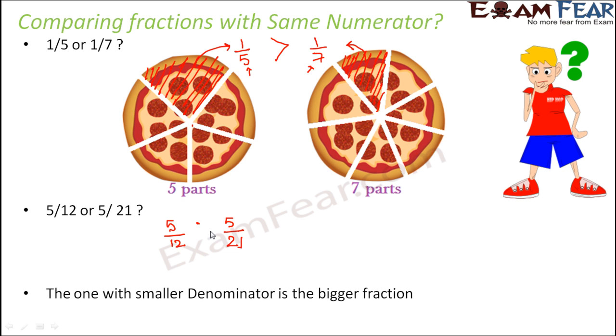So that means overall 5 by 21 will be smaller. So 5 by 12 is greater than 5 by 21.